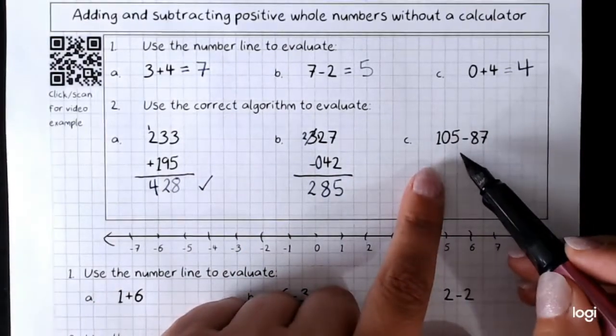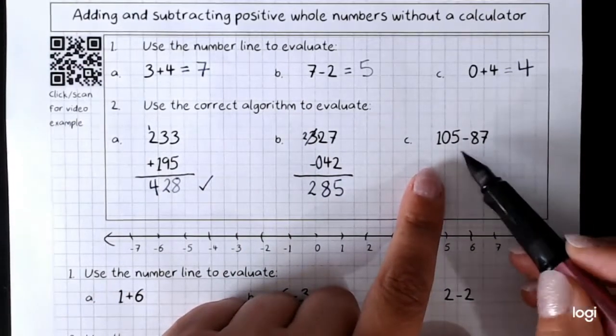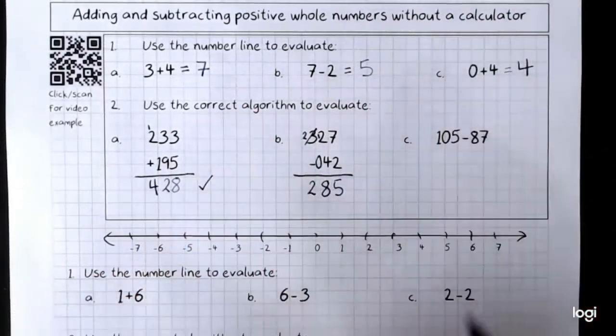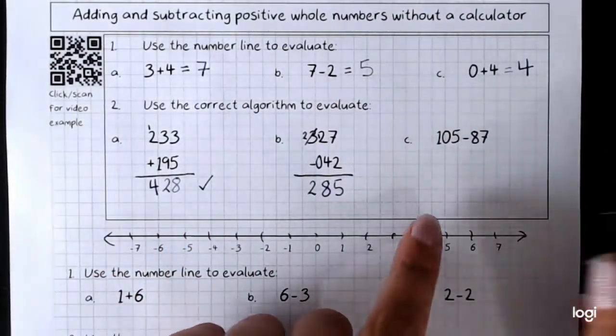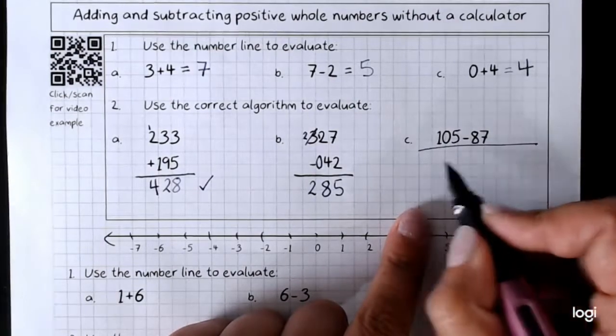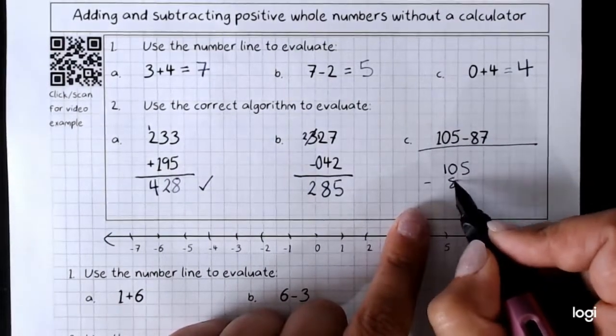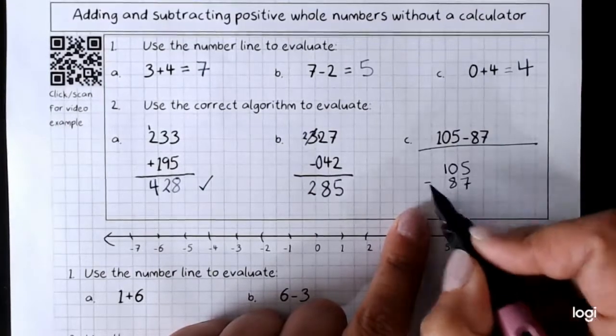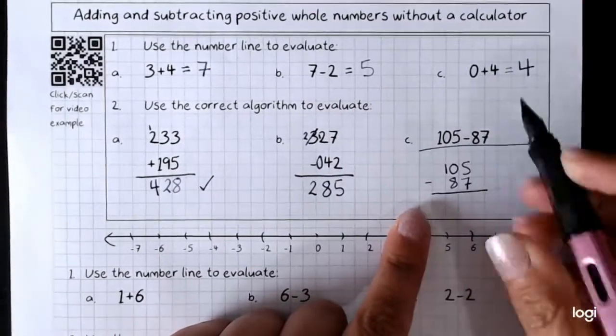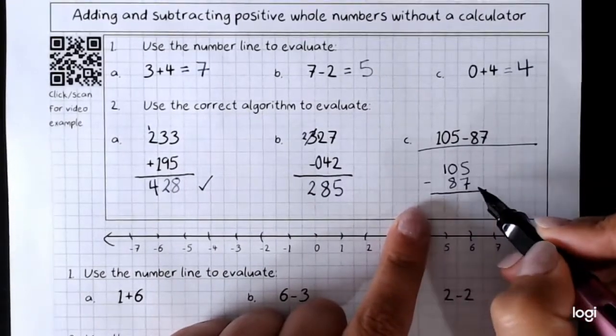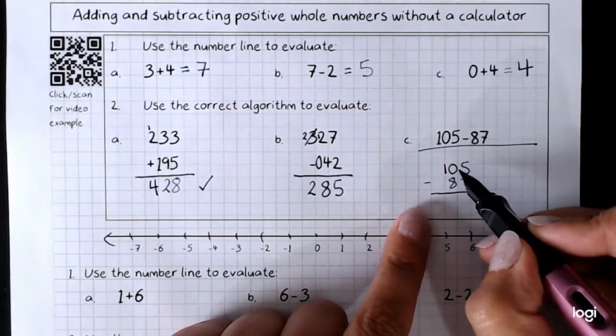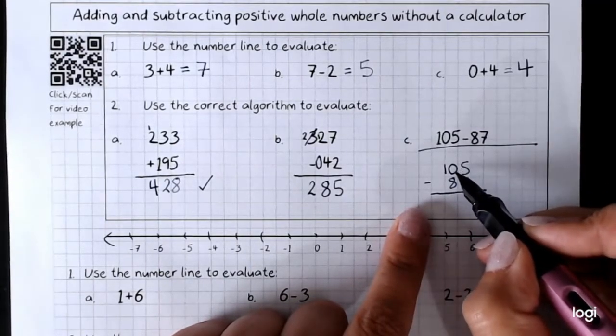Here, 105 take away 87. This isn't set out in the correct algorithm. So we'll have to write it in the correct way first. 105 take away 87, making sure that our place value lines up. 5 take away 7. Can't do it. We'll have to borrow. But this is a 0. There's nothing I can borrow.